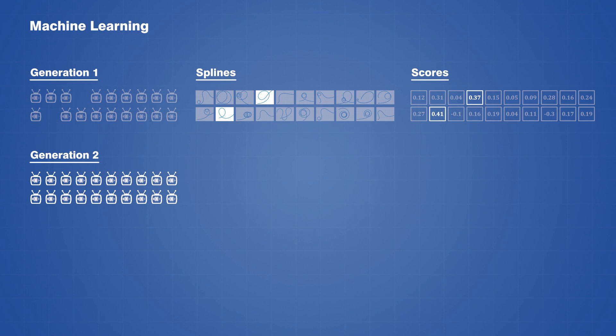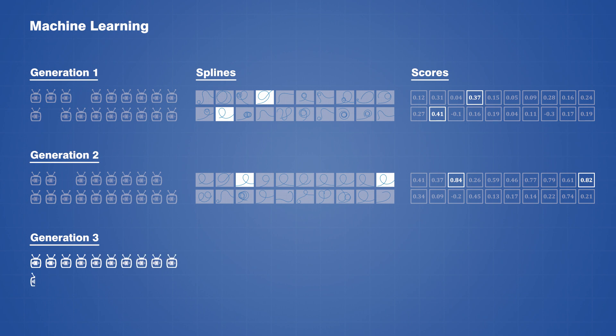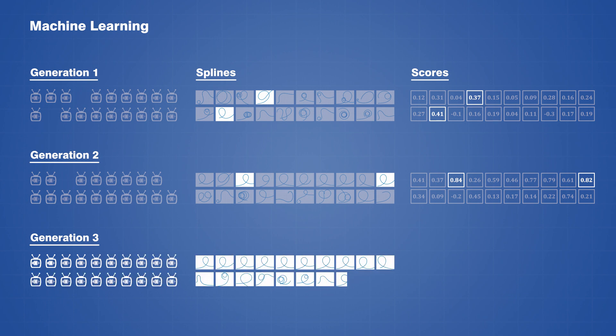With our second generation complete, we can use the new population to generate a new set of track splines, and from here, the whole cycle can repeat over and over until we reach a specified number of generations, or until we find a rollercoaster design that we are satisfied with.